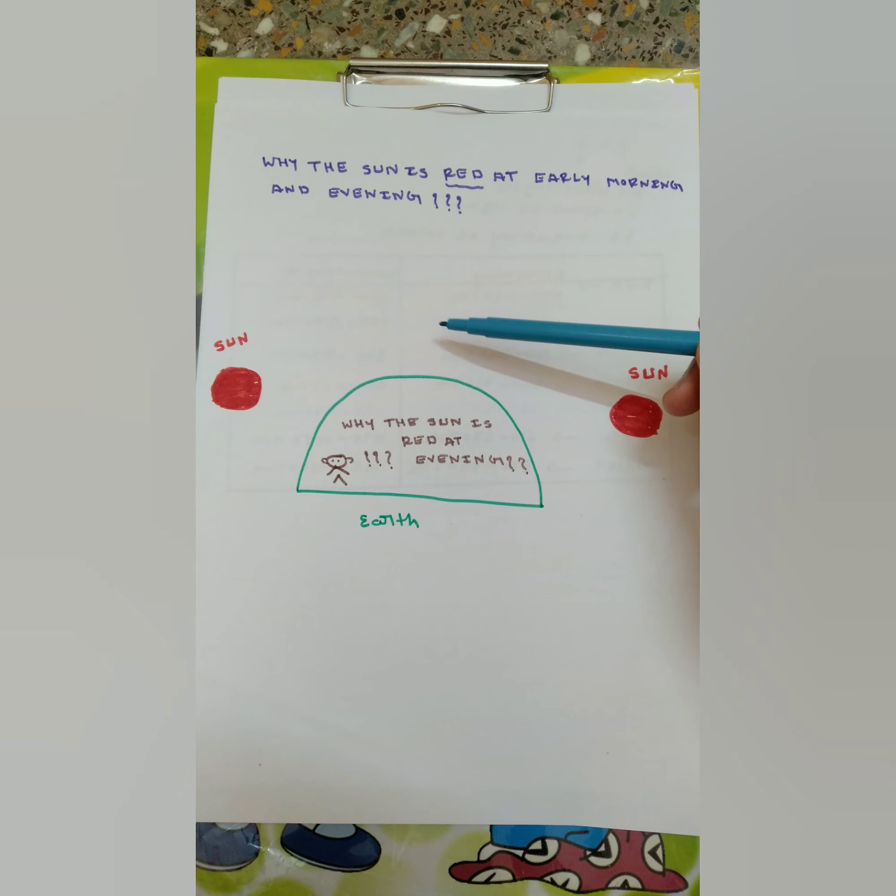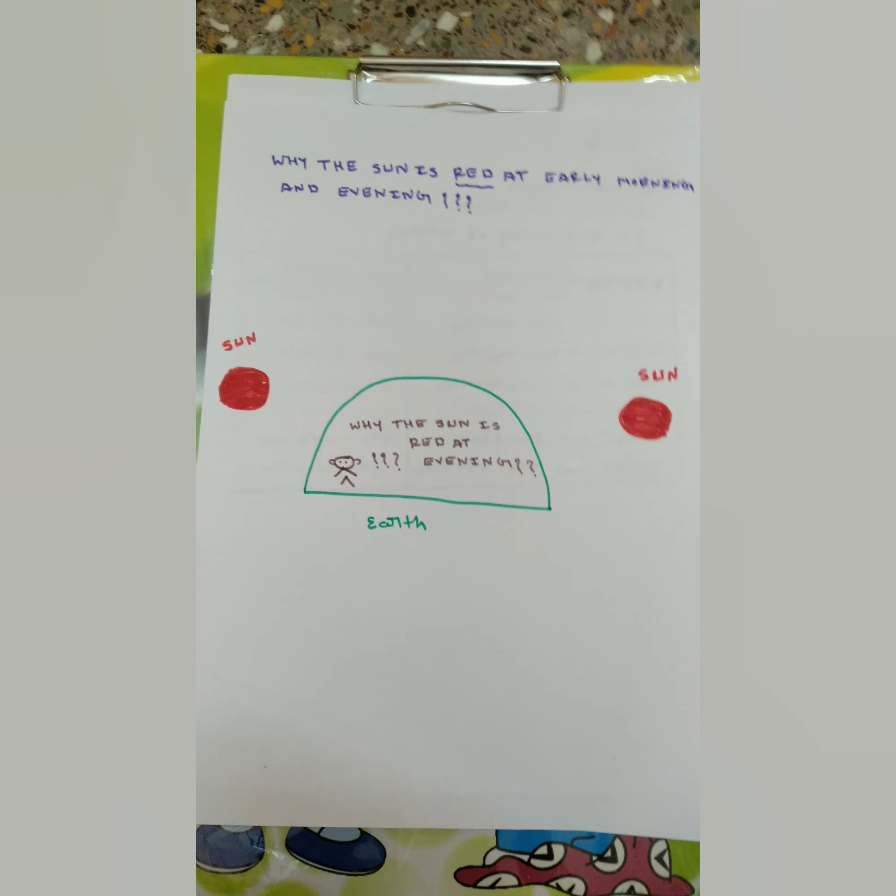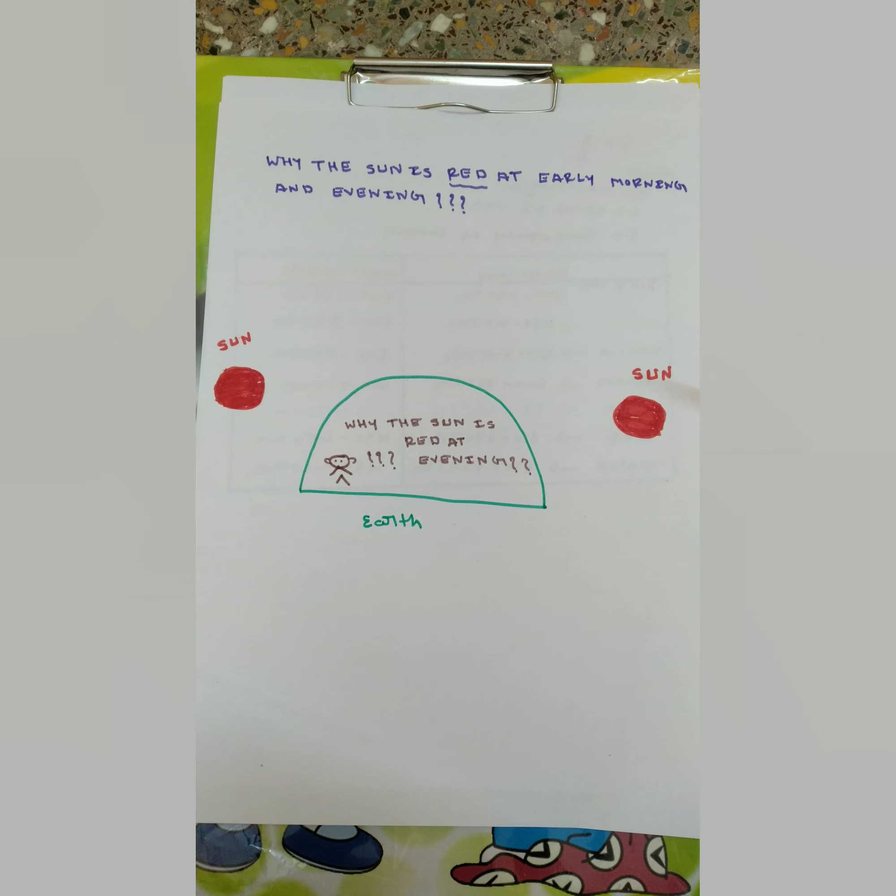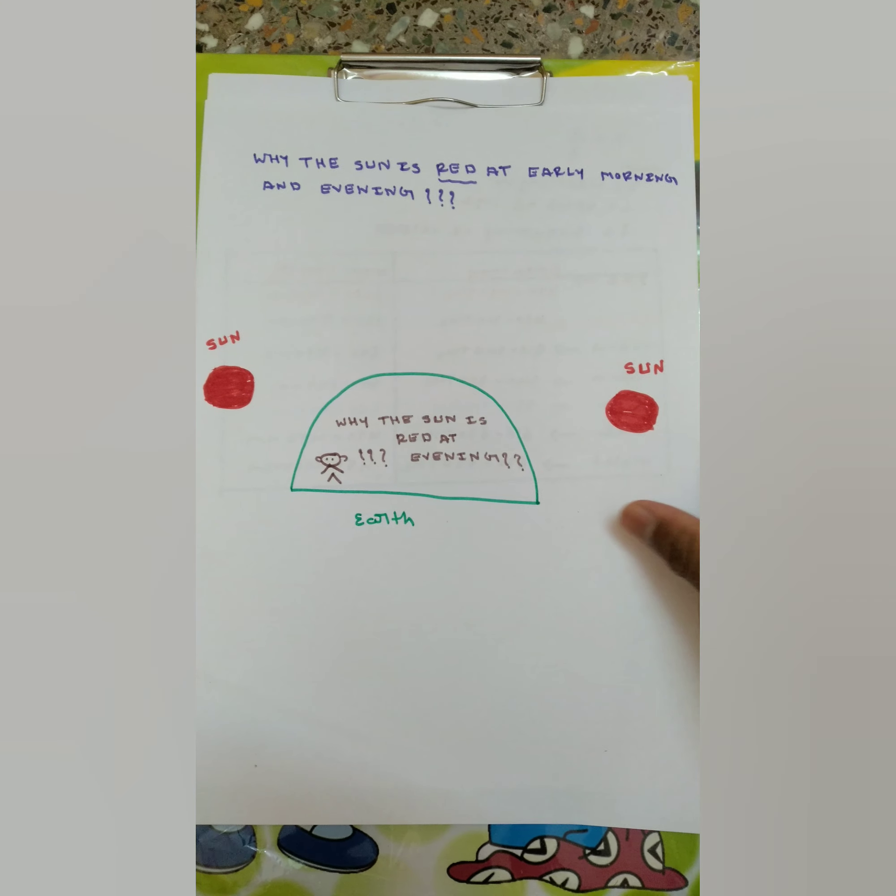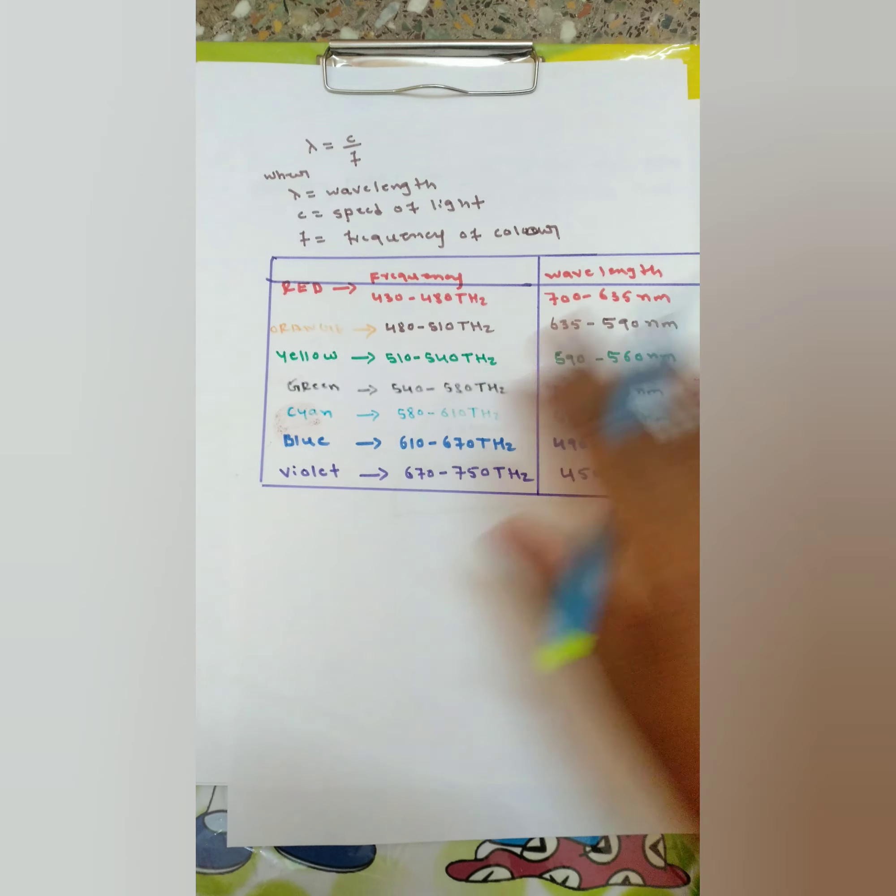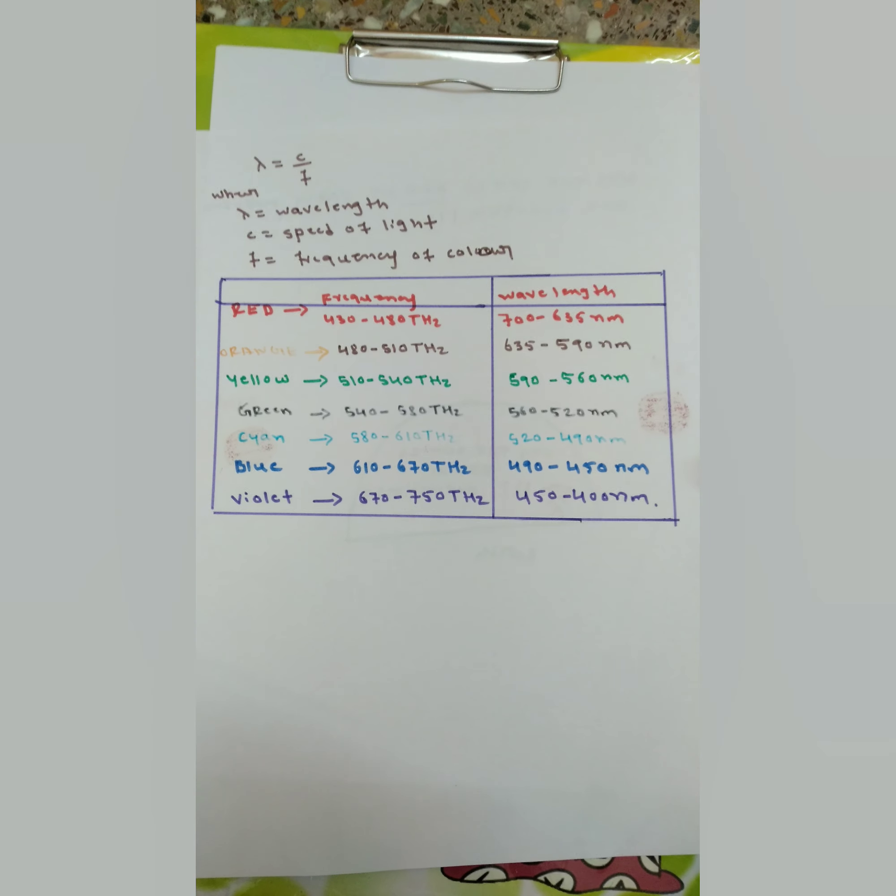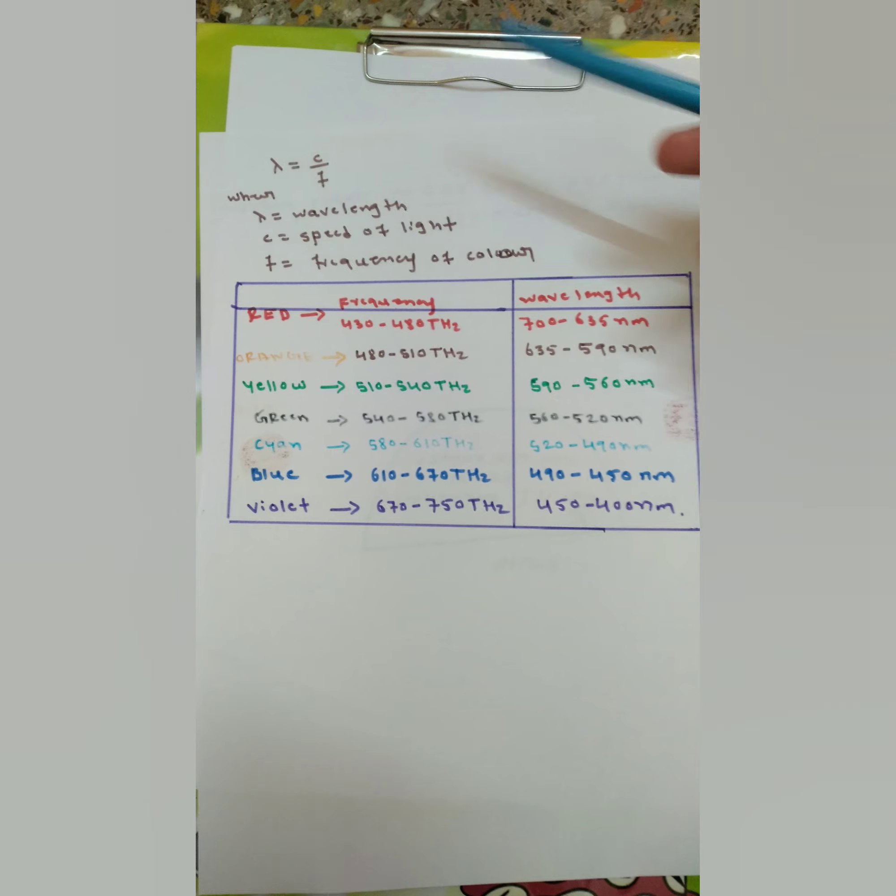This is the morning situation, this is the evening, and this is the afternoon situation where the sun will be exactly over our head. At morning and evening the sun looks very red. Why does it happen? Before knowing that, we should know one formula.